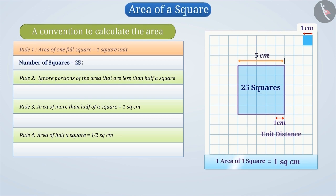Since the area of one full square is 1 cm², we can say that the area enclosed by 25 squares is 25 multiplied by 1 cm², which equals 25 cm².